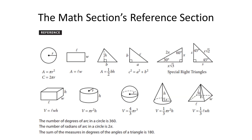Here you can see you're given the formulas for the area of a circle, the circumference of a circle, the area of a rectangle, the area of a triangle, the Pythagorean theorem, the volume of a rectangular prism, the volume of a cylinder, the volume of a sphere, the volume of a cone, and the volume of a pyramid. You're also given information about two special right triangles and three laws.